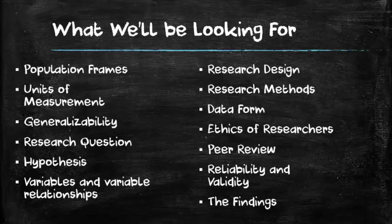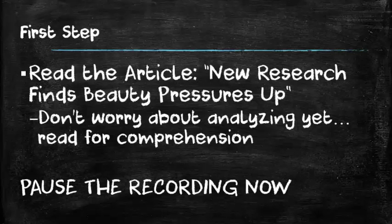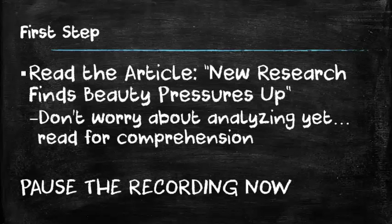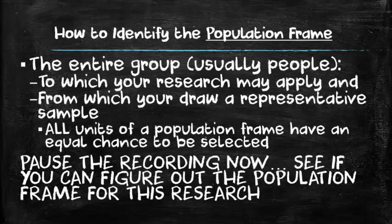What I want you to do now is read the article 'New Research Finds Beauty Pressures Up.' I don't want you to worry about analyzing the article right now — what I want you to do is read it for comprehension. Make sure you can understand what happened with the research and how the researchers went about doing their work. Pause this recording now, locate the link in your lesson to the article, and take a few minutes to read it. The first thing we're going to learn how to do is identify the population frame.